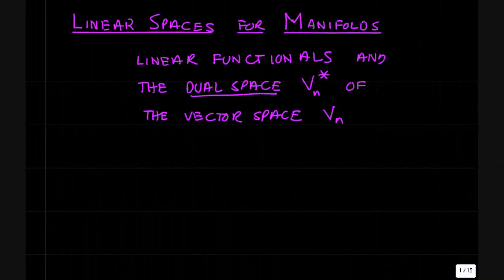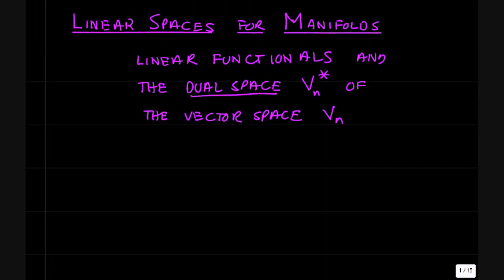Hi all. Welcome to the next part in our series of videos on linear spaces for manifolds. In this video, we're going to talk about the linear space of functionals that map vectors to scalars and the dual space vn star of the vector space vn.